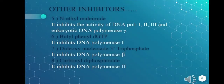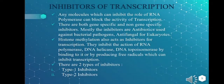Other inhibitors of DNA replication include N-ethylmaleimide, which inhibits the activity of DNA polymerases 1, 2, and 3, and also the eukaryotic DNA polymerase gamma. Butylphenyl dGTP inhibits DNA polymerase 1, dideoxynucleoside 5'-triphosphate inhibits DNA polymerase beta, and carbonyl diphosphonate inhibits DNA polymerase 2.